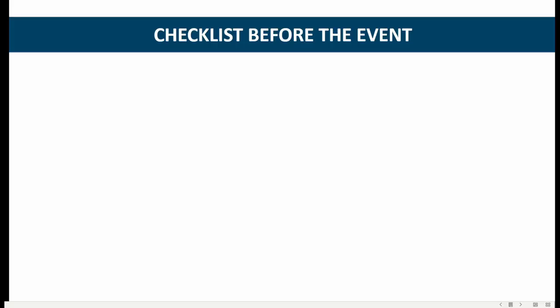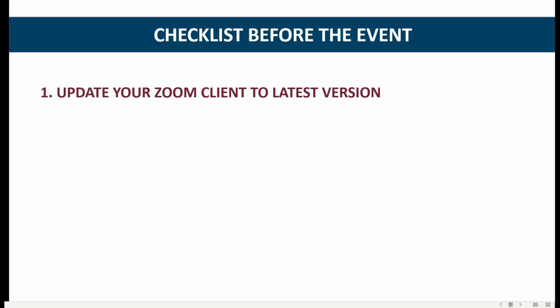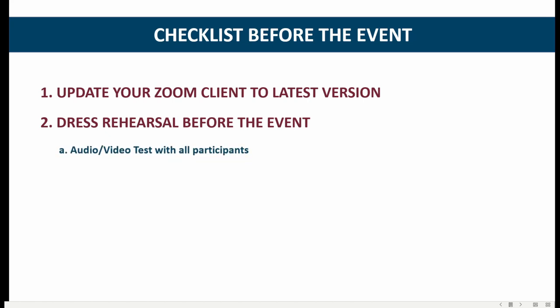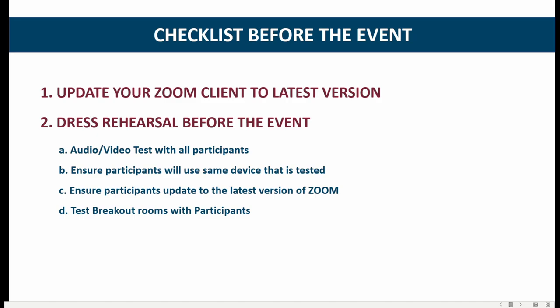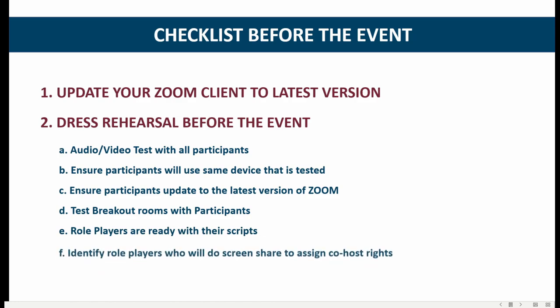In summary, here's the checklist before the event: Update your Zoom client to the latest version. Have a dress rehearsal before the event, which includes an audio-video test with all the participants. Ensure participants will use the same device that is tested. Ensure participants update to the latest version of Zoom. Test breakout rooms with the participants. Role players are ready with their script. And finally, identify role players who will do screen sharing to assign them co-host rights.